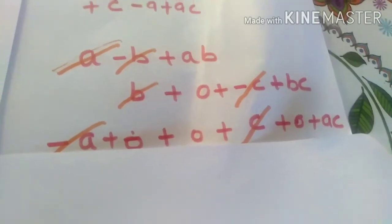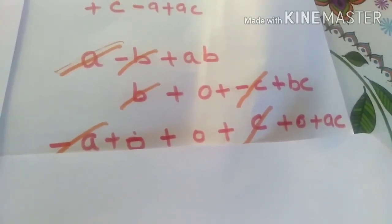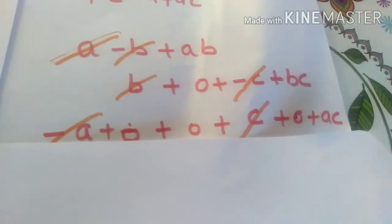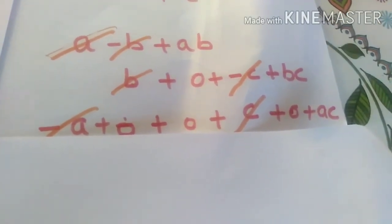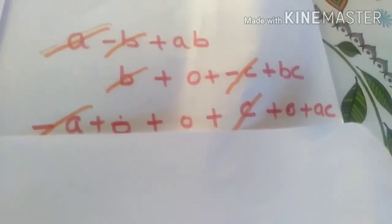In this way: A minus B plus AB. And in the second one, where there is no term, we can write 0. And then the like terms, they are cancelled together if they are having the opposite sign.